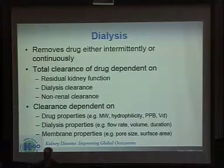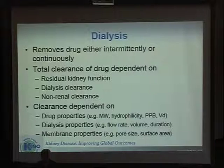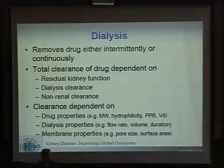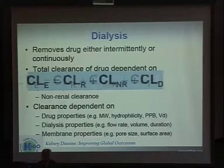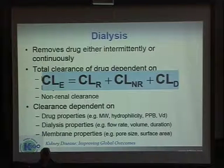Speaking of dialysis, it removes drugs either intermittently when using intermittent dialysis, or continuously when using continuous dialysis. The total clearance of the drug will depend on the residual kidney function — because many of those patients still have residual kidney function — and will depend on the dialysis clearance, and also on the non-renal clearance, like if it's cleared by the liver. So the total clearance will be the combination of residual kidney function, non-renal function, and dialysis.